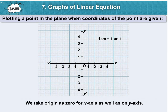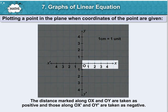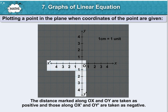We take the origin as 0 for both the x-axis and y-axis. The distances marked along OX and OY are taken as positive, and those along OX' and OY' are taken as negative.